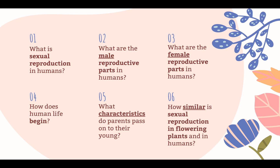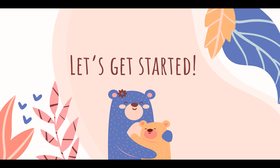We will look at six main guiding questions: what is sexual reproduction in humans? What are the male and female reproductive parts in humans? How does human life begin? What characteristics do parents pass on to their young? And how similar is sexual reproduction in flowering plants and in humans? Without further ado, let's get started.